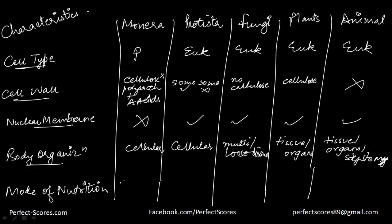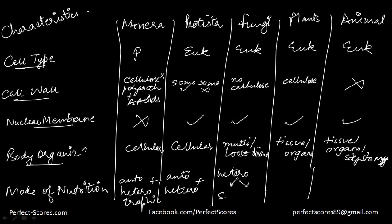What about mode of nutrition? In kingdom Monera it is autotrophic — it can either depend on chemical synthesis or light-based synthesis which is photosynthetic. It can also be heterotrophic, meaning getting nutrition from others — for example, saprophytes or parasites. Protista can be autotrophic and heterotrophic both. Fungi is usually heterotrophic only — it can be saprophytic or parasitic. Autotrophs are generally there in plants, meaning they make their own food — that is the basic definition of plants.